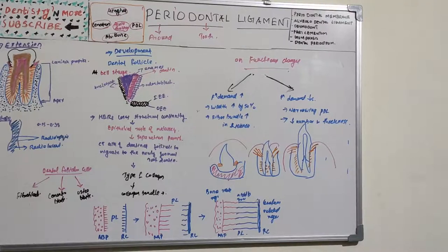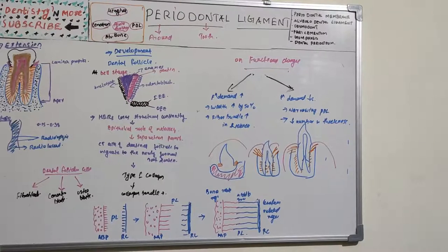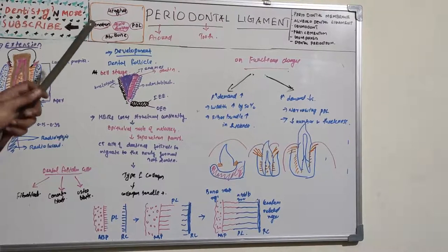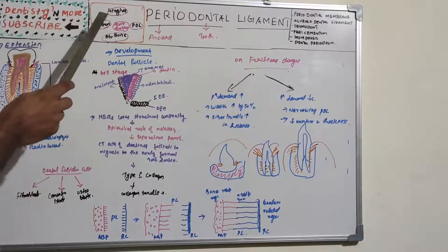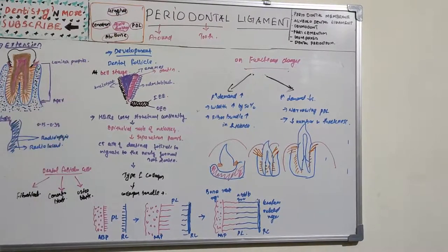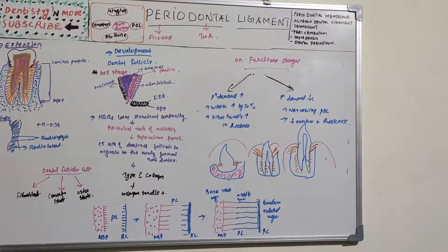Hello everyone, welcome back to another session in Dentistry and More. Today's topic is periodontal ligament. Periodontal ligament is one of the four components of the periodontium — the structure which supports the tooth. It includes two hard tissues and two soft tissues: hard tissues are cementum and alveolar bone; soft tissues are gingiva and periodontal ligament. Gingiva we have already covered, so today's session is about periodontal ligament.